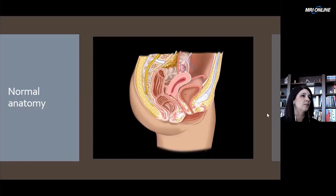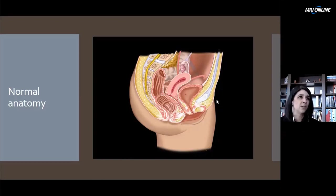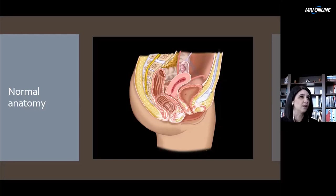Starting in this view, in this schematic, starting from anterior, you have your pubic symphysis right here. Generally, if you're going to do a transabdominal ultrasound, you're going to place your probe right around here on the pelvis. You're going to have to place it slightly above the symphysis to image through the bladder.